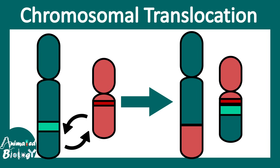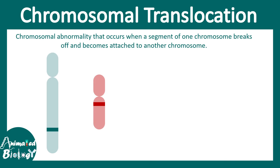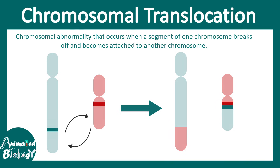In this video, we'll be talking about chromosomal translocation. Chromosomal translocation is one type of chromosomal abnormality which occurs when a segment of one chromosome breaks off and becomes attached to another segment of the chromosome. So it's a swap between two chromosomal regions, maybe between two non-homologous chromosomes.